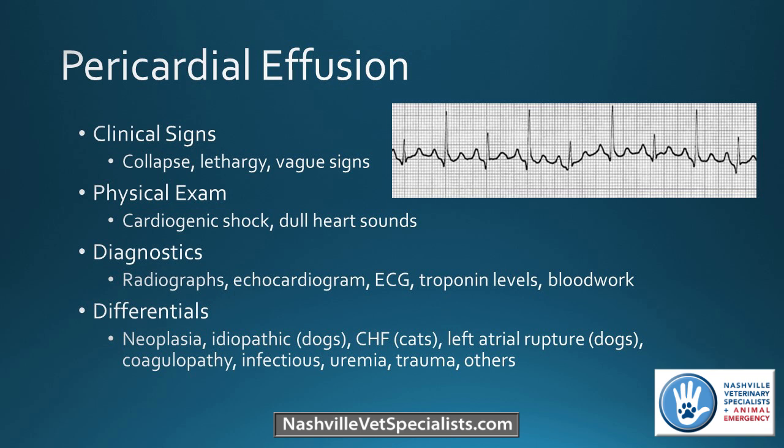By far, cancer is one of the more common reasons we see pericardial effusion. We also see idiopathic pericardial effusion in dogs. In cats, heart failure is more likely to cause pericardial effusion than in dogs, though left atrial rupture can cause it in dogs — usually small white breed dogs with mitral valve disease. Coagulopathies, infections, and uremia are also on the list. Usually cancer, idiopathic, or heart failure are the most common causes.